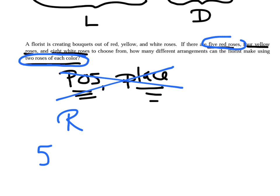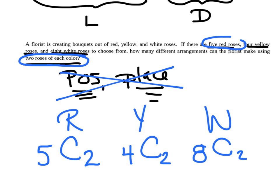Now, it says you're going to pick two of each color. So let's start with the red roses. Out of the red roses, there's a total of five, and I'm going to choose two. Out of the yellow roses, there is a total of four, and I'm going to choose two. And out of the white roses, there's a total of eight, and I'm going to choose two. Now, the question is, do you add these, or do you multiply these? All right, so again, let's make a little note here. If we say and, we're going to multiply. And if we say or, we're going to add.